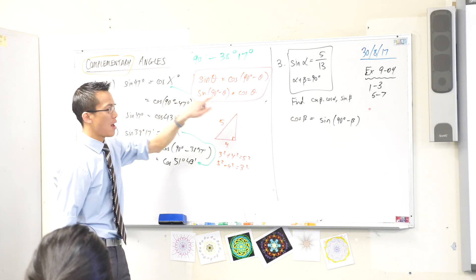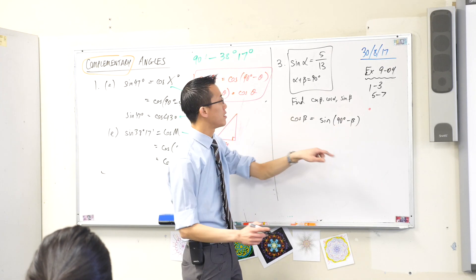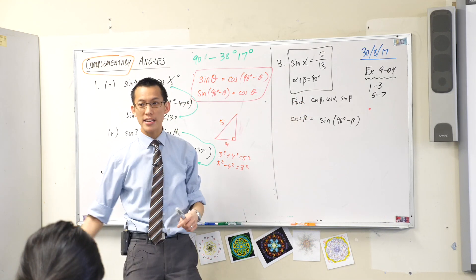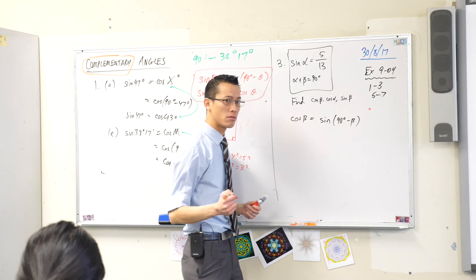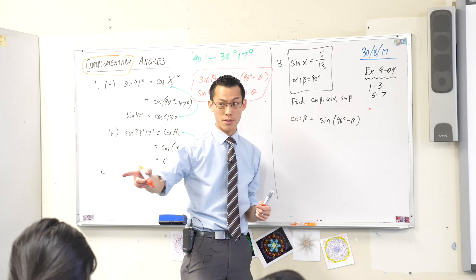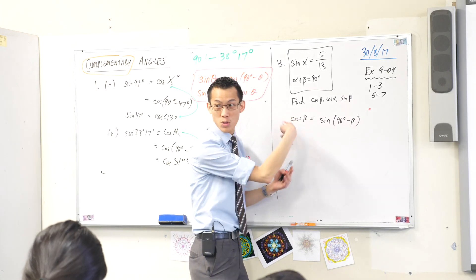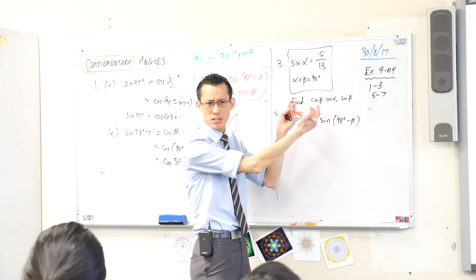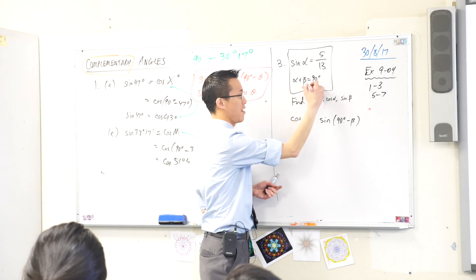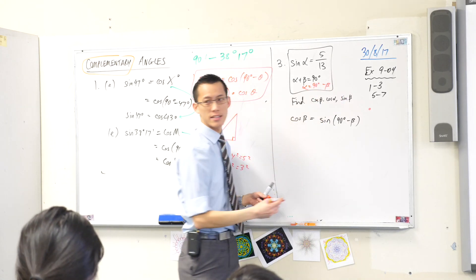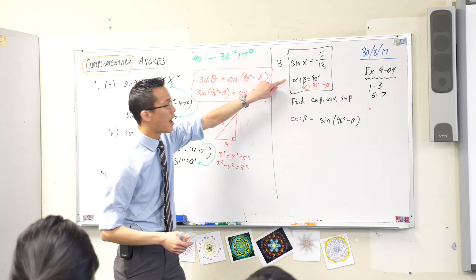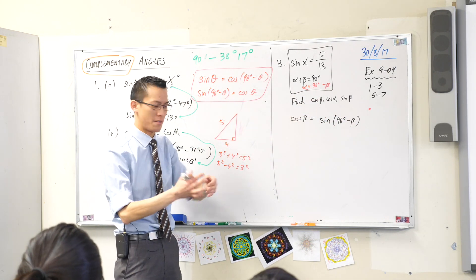But 90 minus beta, I can work out what that is. Have a look at this which was given in the question. There's a 90 minus beta hiding in there. Can you see it? If I want to get 90 minus beta most directly, I should subtract beta from both sides. That'll leave me with alpha over here, and 90 minus beta on the right hand side. So 90 minus beta was hiding up in here, I just needed to tweak it a little bit to see it.